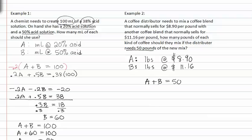Our second equation should state how much coffee at what price. So we know that the first type of coffee is 8.90 per pound times the number of pounds, plus 11.16 times the number of pounds of B, equals 50 pounds, and we want coffee that sells for $9.85 a pound. You can add this to your workbook.